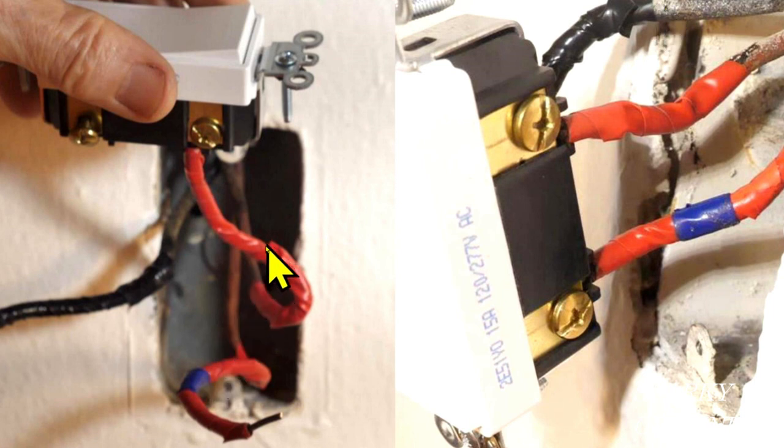So that leaves us the red wires, which are the traveler wires, which enables you to control the light from either end of a hallway. I said in the video that I did a continuity test to find that this particular wire is this particular wire. They're continuous.